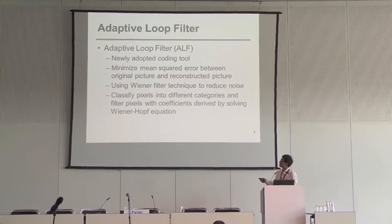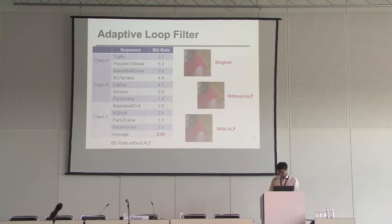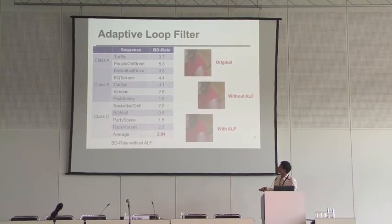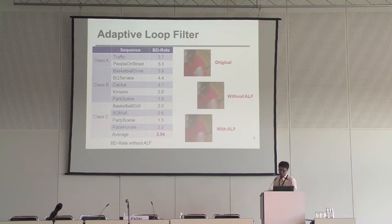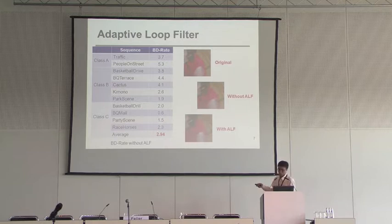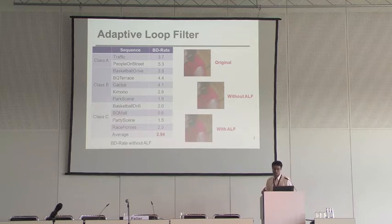Adaptive filters classify pixels into different categories and filter pixels with coefficients derived by solving Wiener equations. The next table gives the objective performance comparing an encoder with adaptive filter versus one without adaptive filter in the HEVC reference model. We can see that with ALF coding, performance can improve about 3%, and for some sequences more than 5%. On the right side, three pictures show the subjective performance of the adaptive filter, and we can see that coding with adaptive filter has better performance than without.